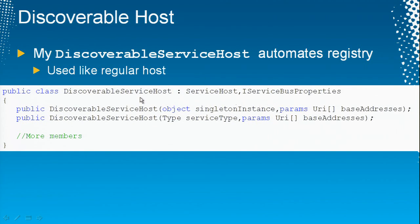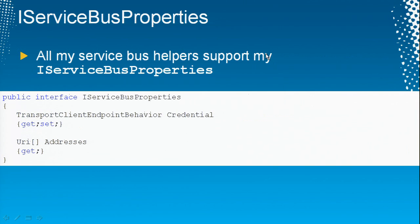I wrote a little host called Discoverable Service Host, which derives from Service Host and is used just like a regular host — you can't tell it's any different — except it will automatically publish for you. It encapsulates the act of applying the behavior across all your endpoints. This host supports an interface I call iServiceBusProperties, which contains a credential used against the service bus plus the addresses you monitor. I've written a massive set of helper classes and a framework on top of the service bus, and all my helper classes support iServiceBusProperties.